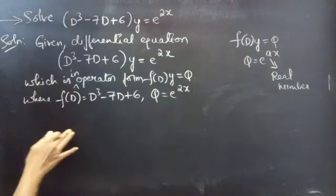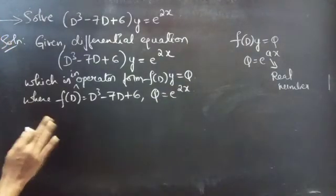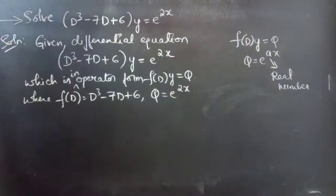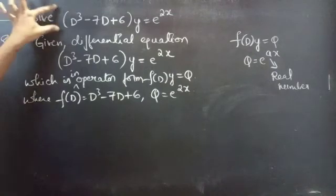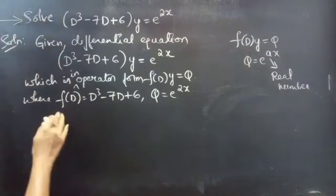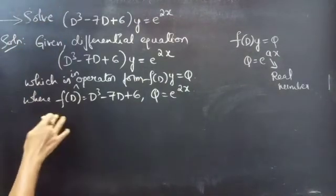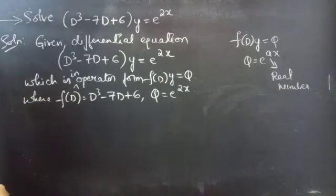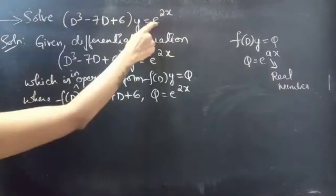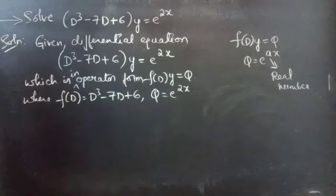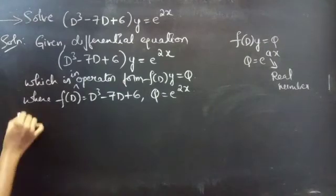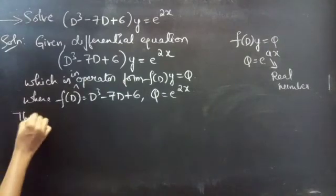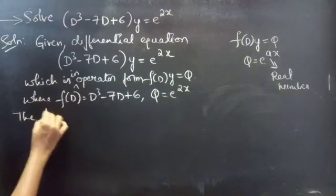Now we will find the complementary function. To find the general solution, first we will find the complementary function, and then we will find the particular integral using the given Q and F(D). Firstly, let's see the auxiliary equation.